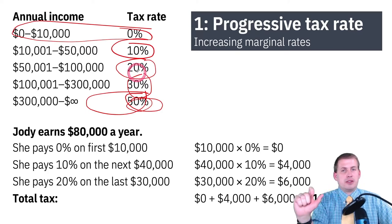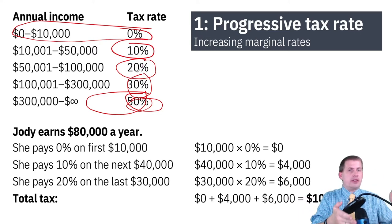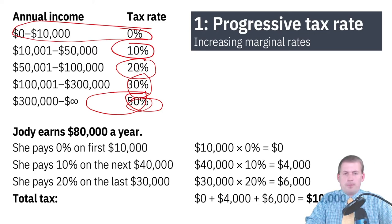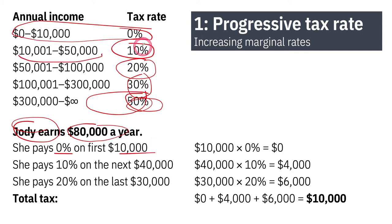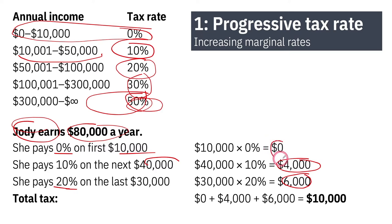So that's going to be 50 cents on that dollar — which is half the money, but only half of the money after the $300,000 level. Here's an example: a hypothetical person named Jody earns $80,000 a year. She pays $0 on the first $10,000, then 10% on the next $40,000, which is $4,000. Then she pays 20% on the next $30,000 (from $50,000 to $80,000), which is $6,000. So her total tax burden is $0 plus $4,000 plus $6,000, equaling $10,000.